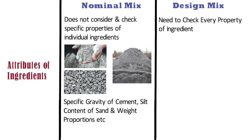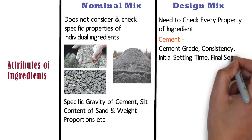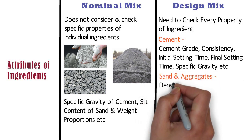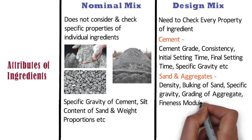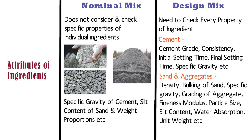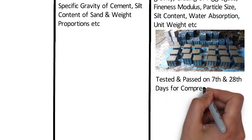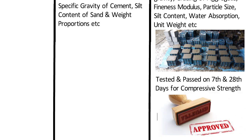Properties checked for design mix include: for cement — cement grade, consistency, initial setting time, final setting time and specific gravity; for sand and aggregates — density, bulking of sand, specific gravity, grading of aggregate, fineness modulus, particle size, silt content, water absorption and unit weight. Based on these properties, the mix design is established according to project needs and verified with a trial mix. Once the trial mix has been tested and passed at 7th and 28th days for compressive strength, it is approved for batching and execution at site level.